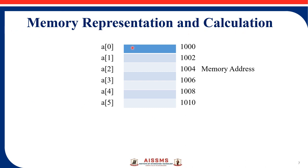For memory representation and calculation, consider array A of 6. The array indices start from 0, 1, 2, 3, 4, 5. A is the name of the array. The memory addresses of elements are shown: the base address is 1000. Since it is an integer array, each element takes two bytes, so the addresses are 1000, 1002, 1004, 1006, 1008, and 1010. Storing A of 6 as an integer array takes these memory addresses.